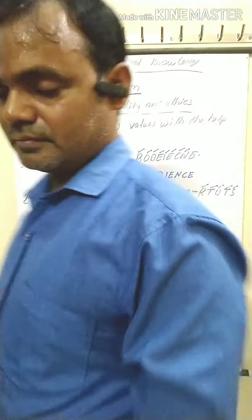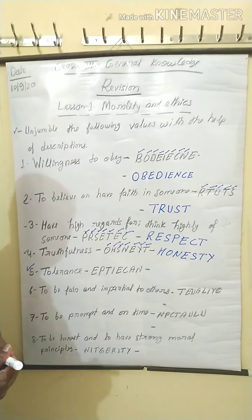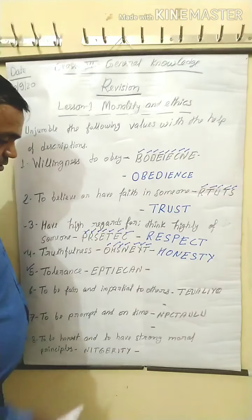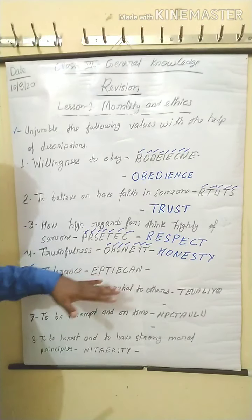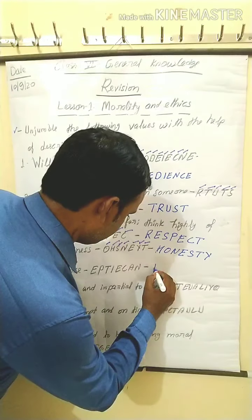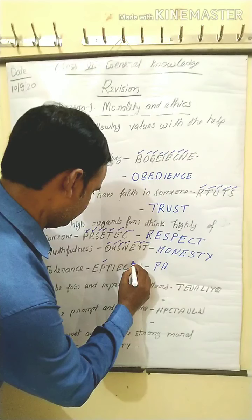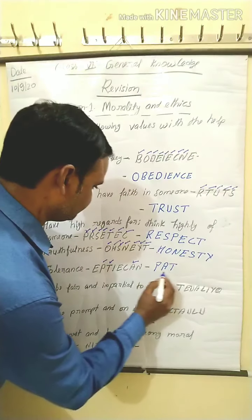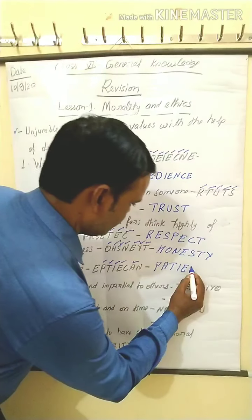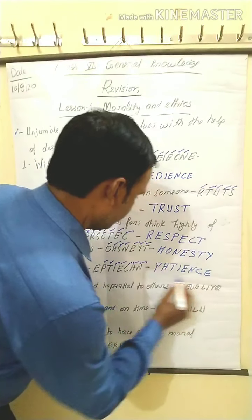Next, number five: tolerance. The jumbled letters given are T-O-L-E-I and E-P-T-I-A-C-A-I-I. What is the correct word of this jumbled word? The answer is Patience.